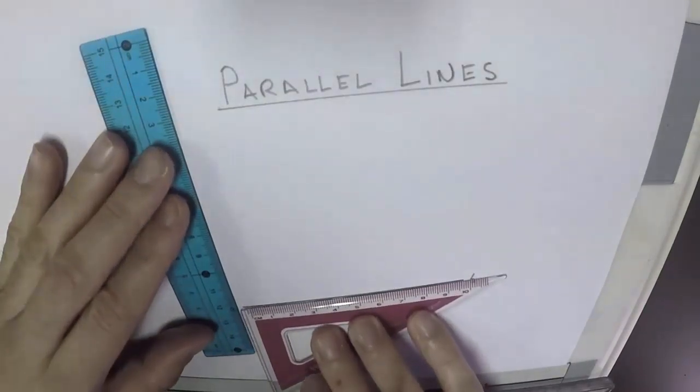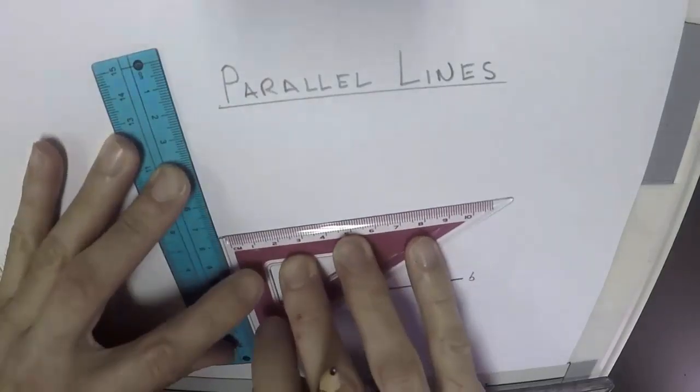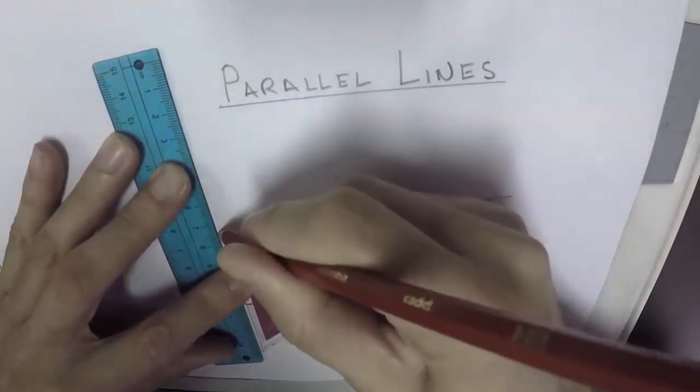So now again it's the same thing. We're going to line it up on the line. We're going to get our ruler. We're going to press it firmly against the set square and then we are going to move the set square up.